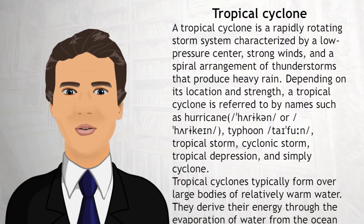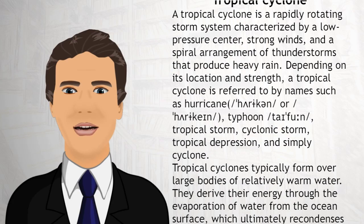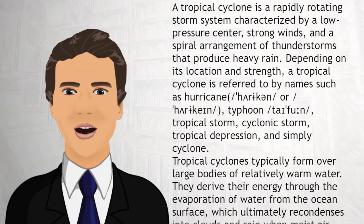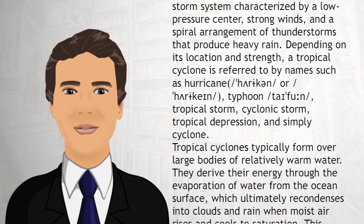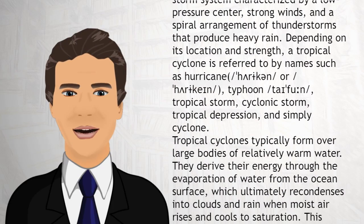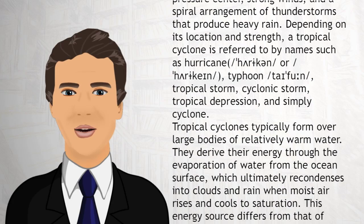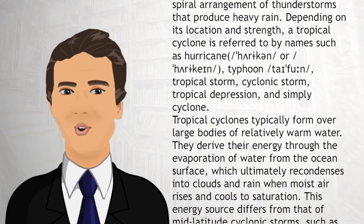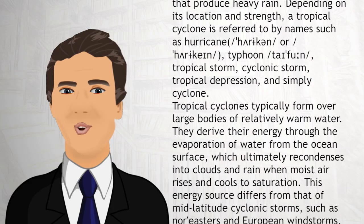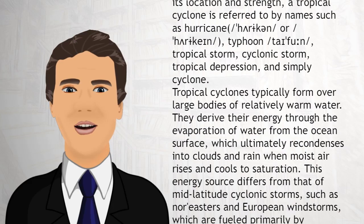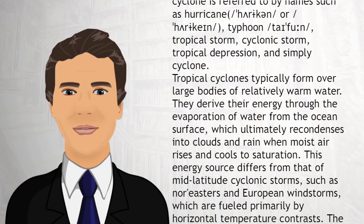Tropical cyclones typically form over large bodies of relatively warm water. They derive their energy through the evaporation of water from the ocean's surface, which ultimately recondenses into clouds and rain when moist air rises and cools to saturation.